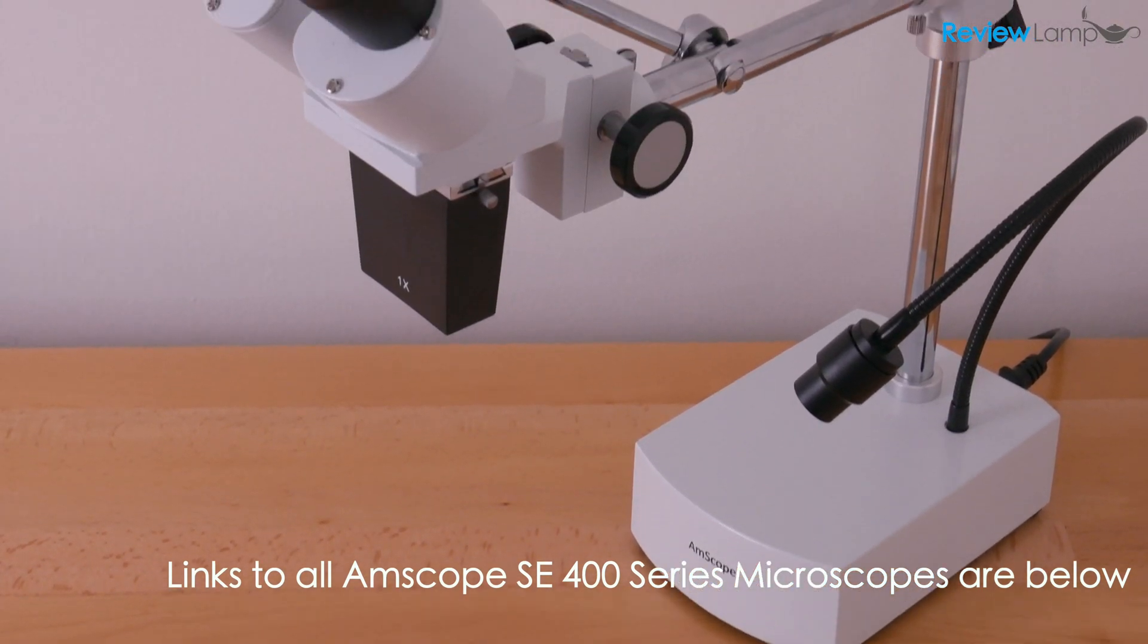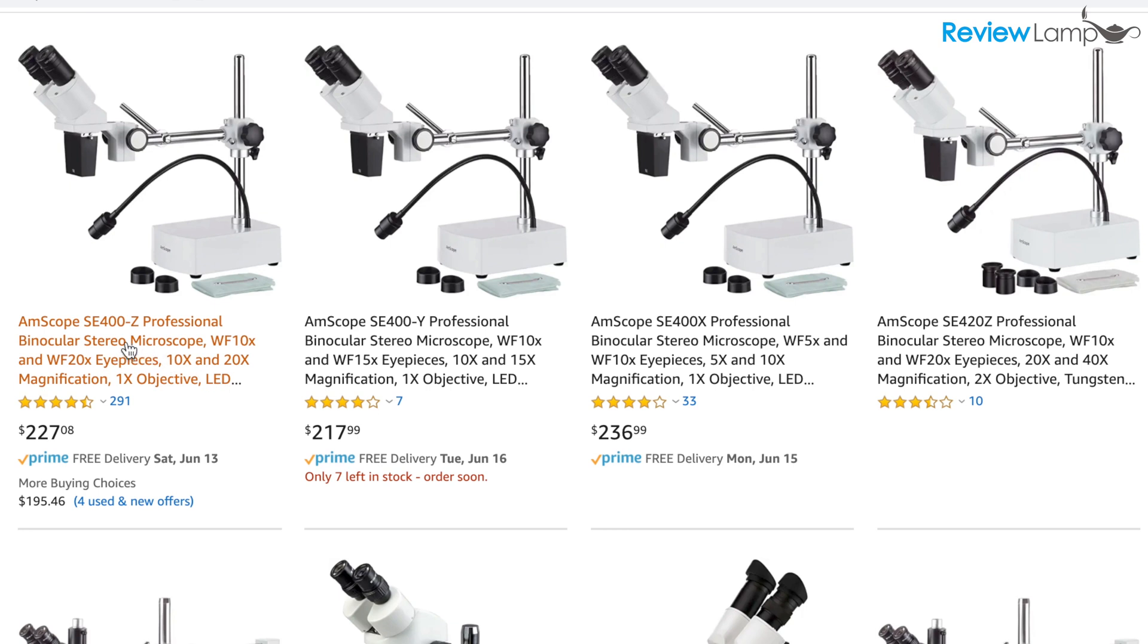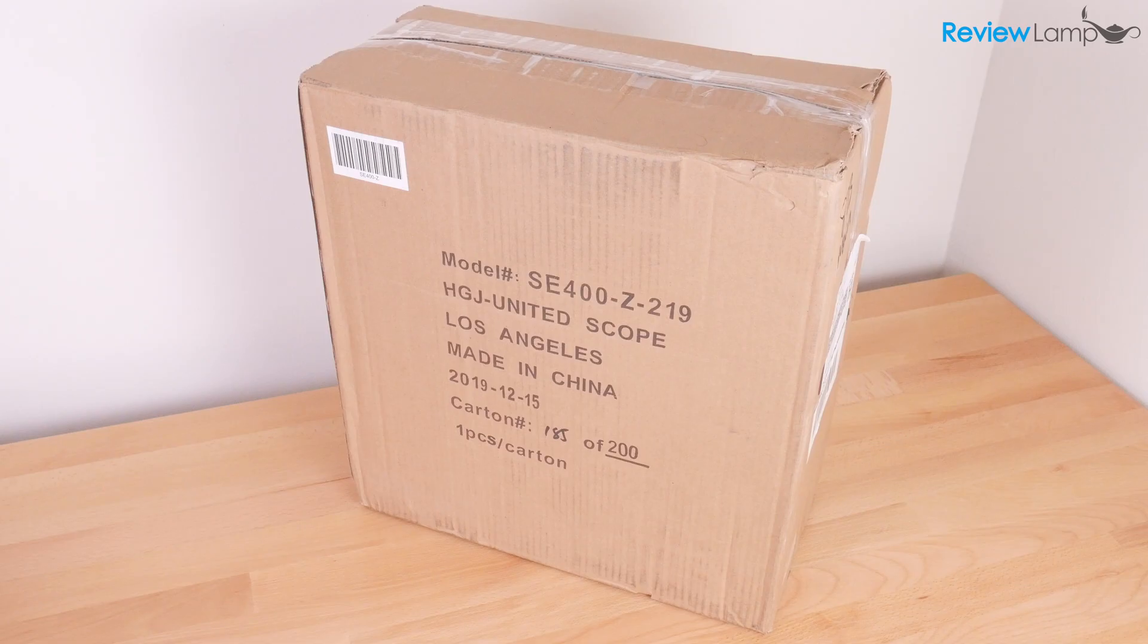Now, the assembly procedure is exactly the same whether you buy an SE400X, Y, or Z. The only critical difference between these three microscopes is the eyepiece magnification. So what I'm going to do is get all the parts out of the box, lay it out, and then we're going to start assembling it.